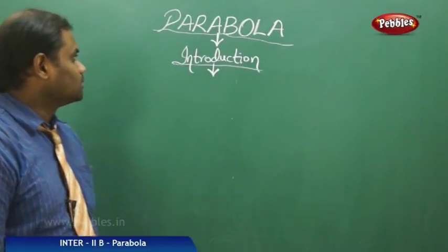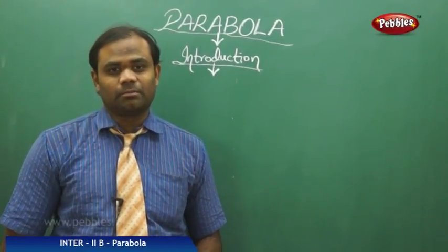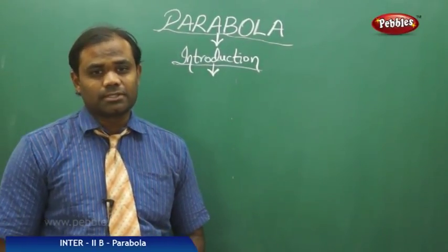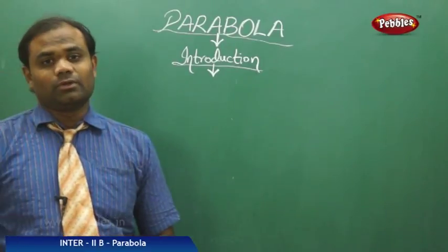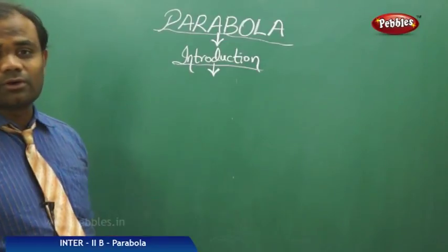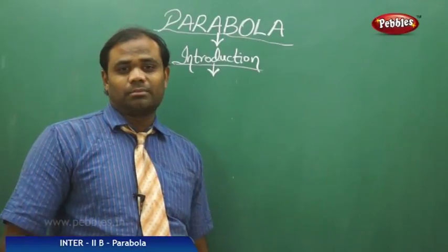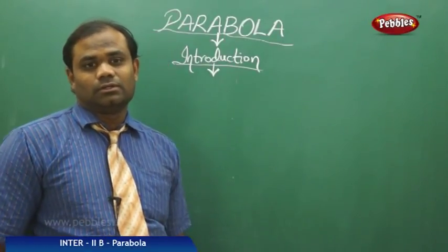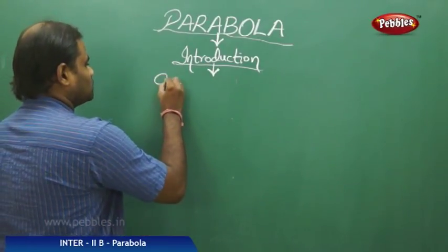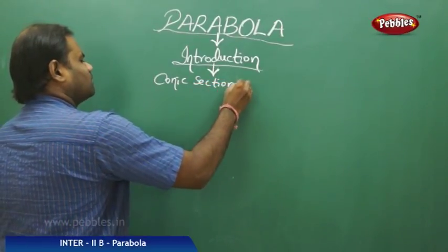Now let's see the topic called parabola with an introduction of what exactly is a parabola. Now that we have discussed about circle, the next concept is parabola. But before we discuss parabola, we need to take the most important concept from which the circle, the parabola, the ellipse, or the hyperbola — the different types of two-dimensional structures — are obtained through the conic sections.